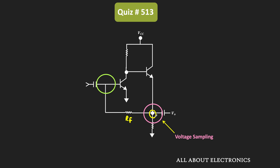Similarly, on the input side, we also have the shunt connection. Here, this is the input voltage, and through this coupling capacitor, this input voltage is applied to this amplifier circuit. The current supplied by this input voltage is equal to Is. At this node, this current is getting divided into two branches — this will be the feedback current, while this will be the input current. Since the current is getting divided in the two branches, we can say that on the input side, we have the shunt connection.